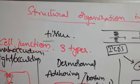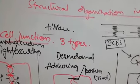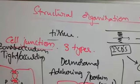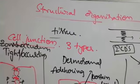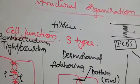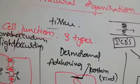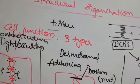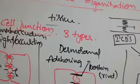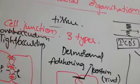Today's topic is structural organization in animals. We come to the Humatozoa. Humatozoa means only multicellular organisms are considered; single-celled organisms are not considered. In single-celled organisms, the cell organelles act as the digestive, circulatory, respiratory, and all other systems.